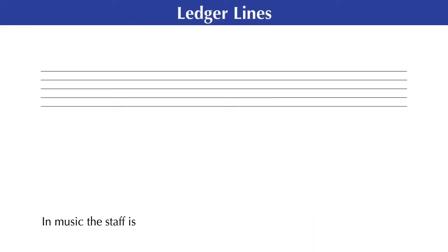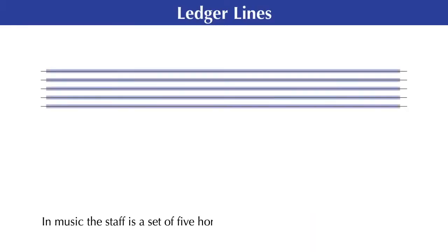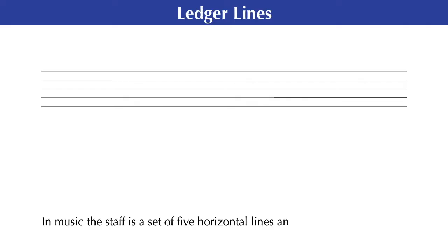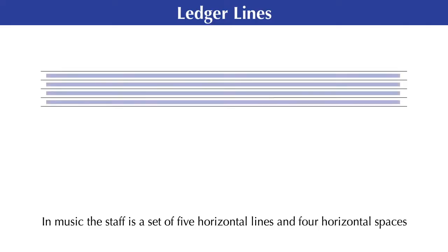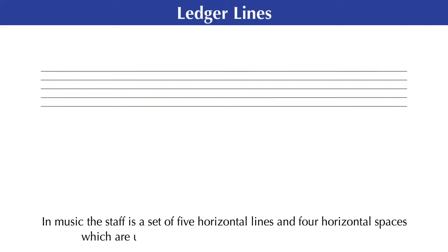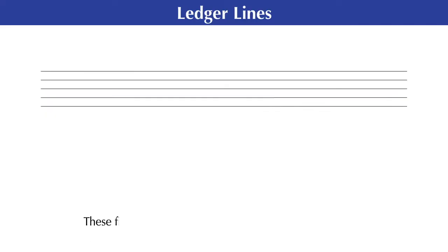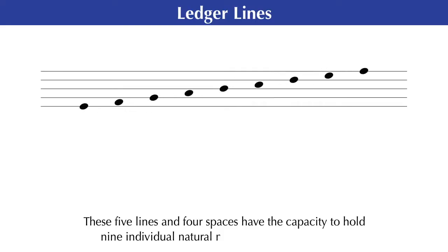In music, the staff is a set of five horizontal lines and four horizontal spaces, which are used as a template for identifying musical notes. These five lines and four spaces have the capacity to hold nine individual natural notes, and their accidentals.